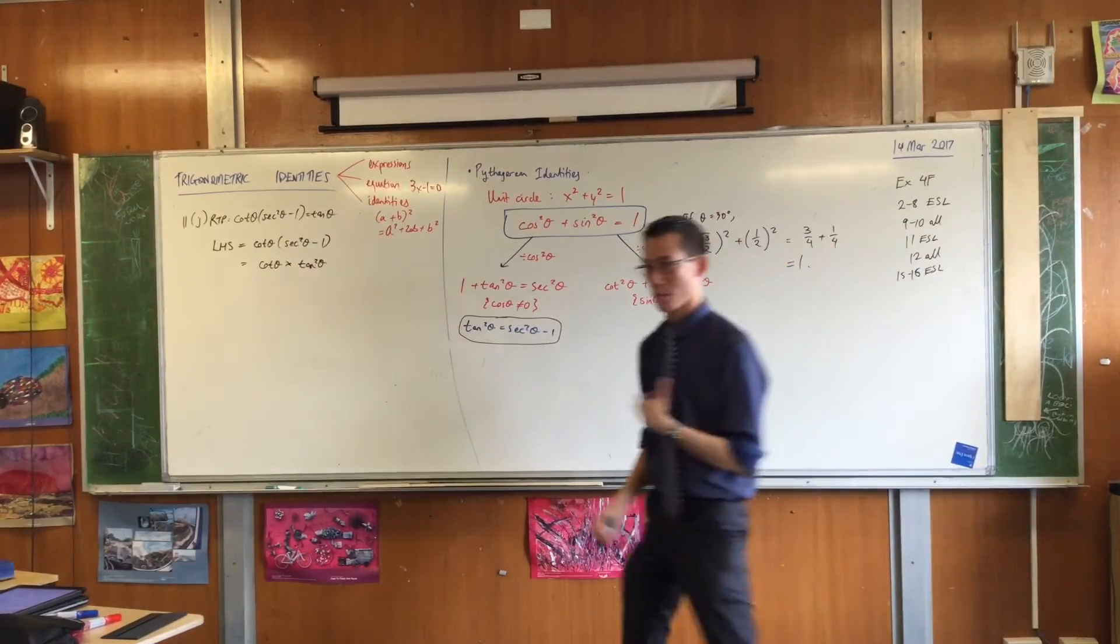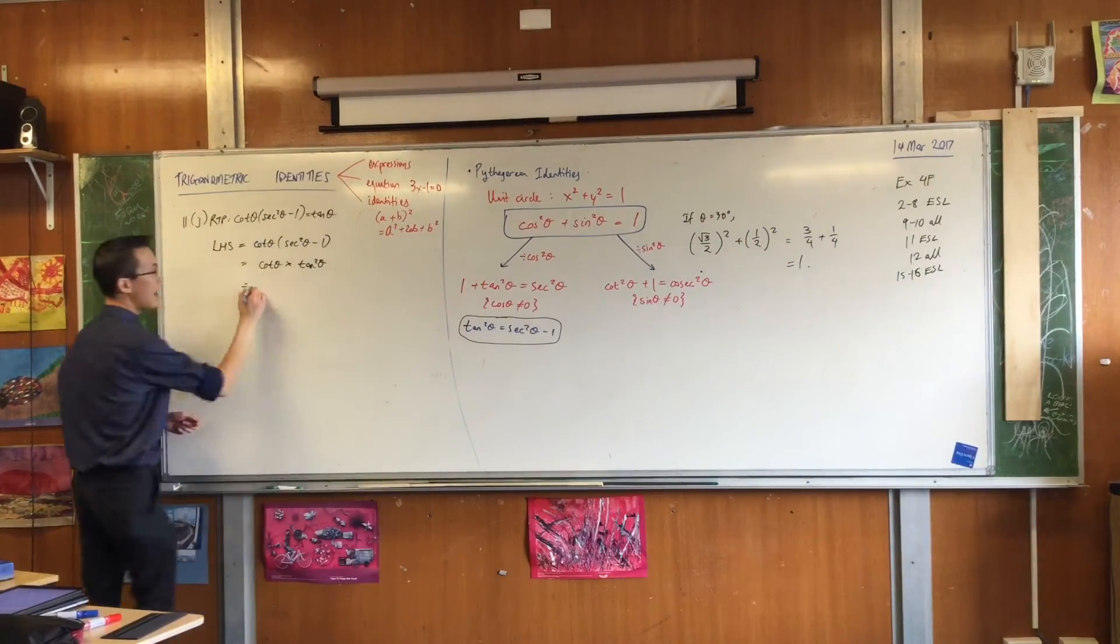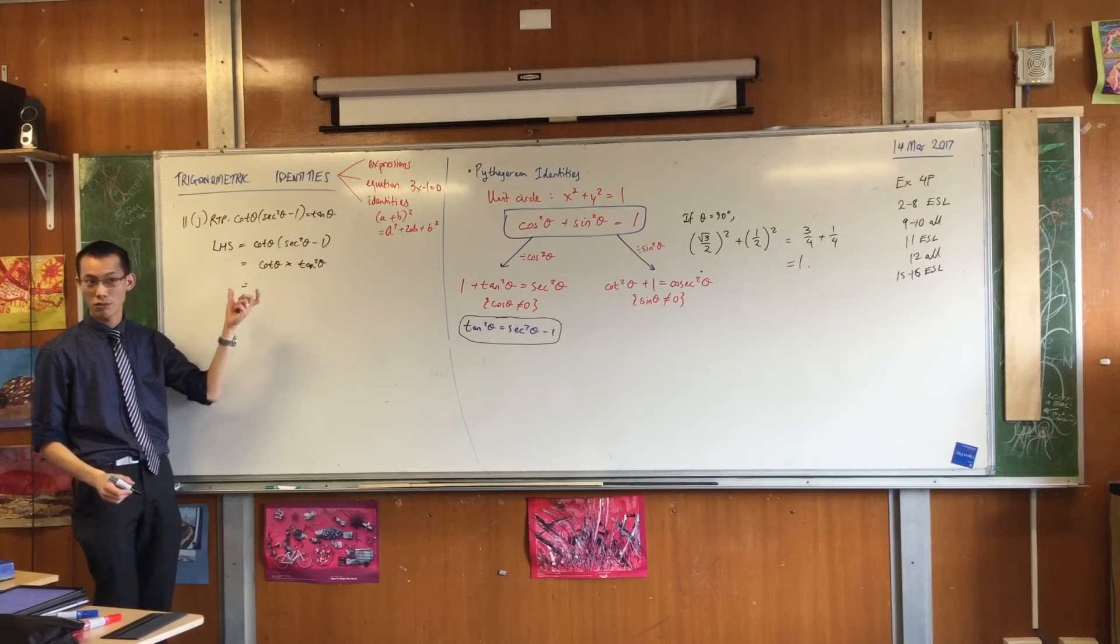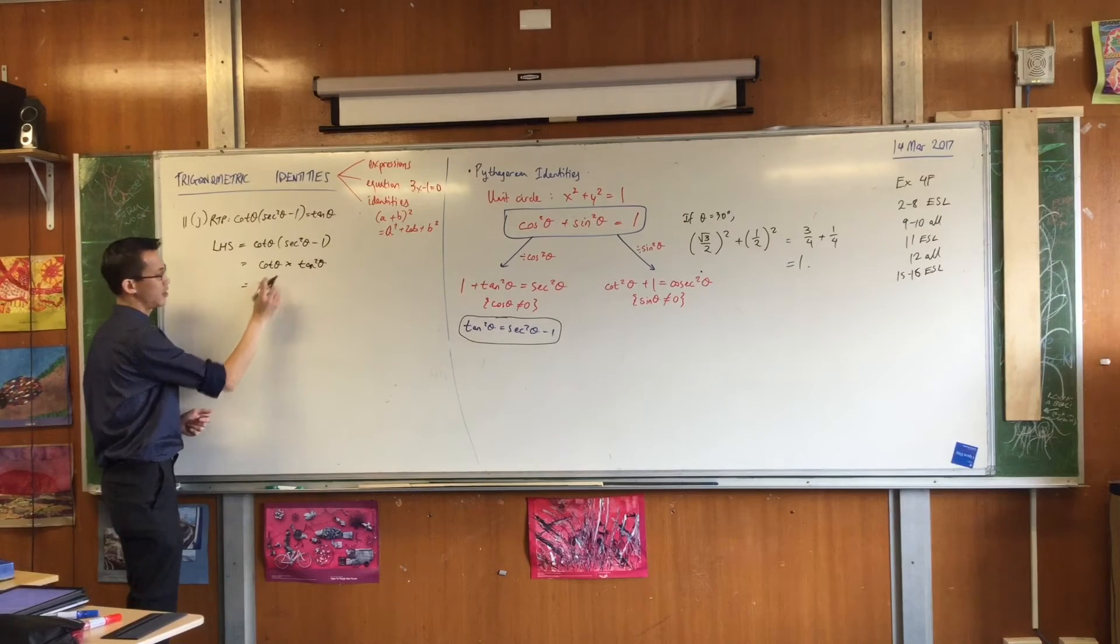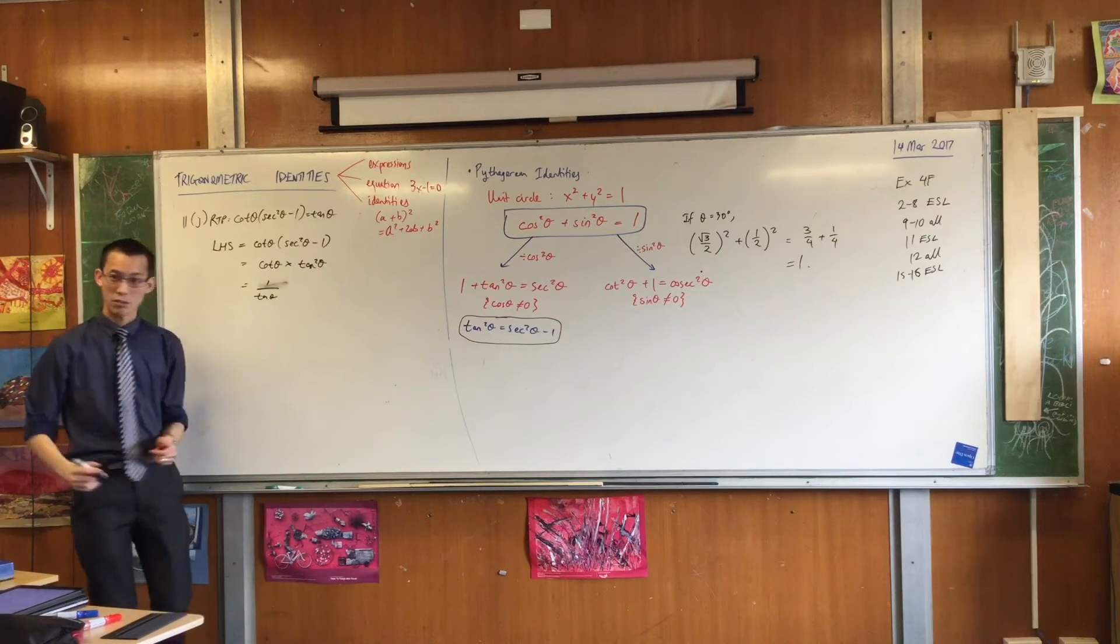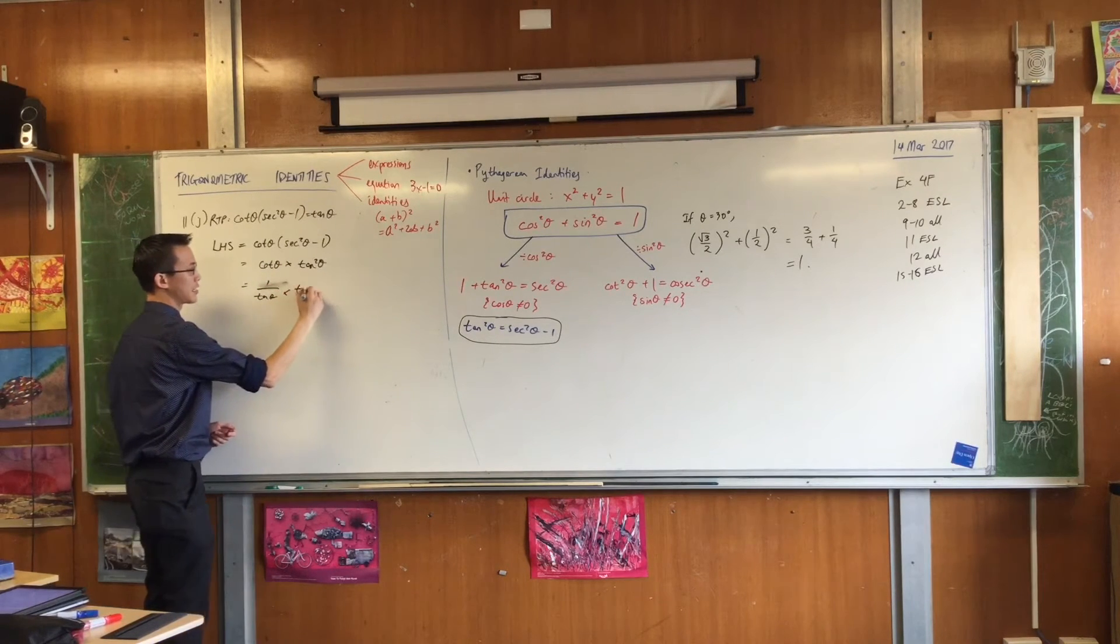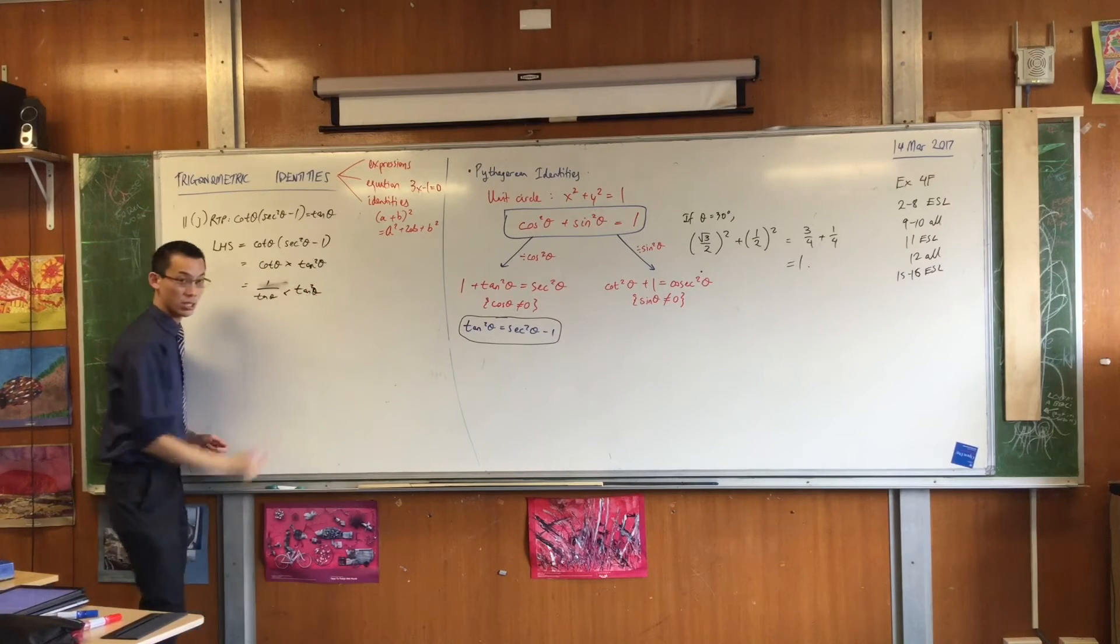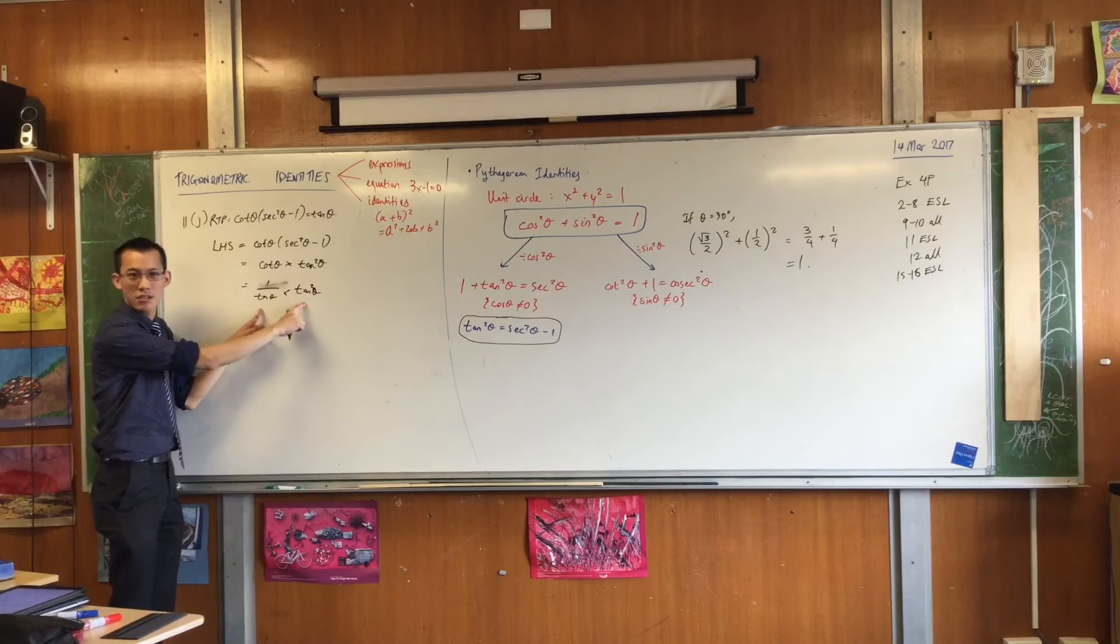So here's what I would do to make it really obvious. I would convert cot into cos over sine. Actually, no, 1 over tan is better, because it's just as simple, right? I've got the reciprocal there, I've got tan, I've got two of them there, and now that's pretty obvious, right? Do you agree? Like, everyone can see that...